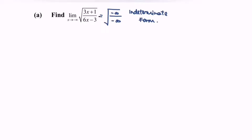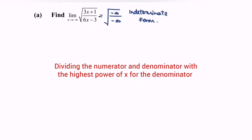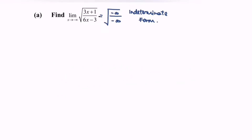The strategy to solve this kind of situation is to divide the numerator and the denominator by the highest power of x in the denominator. In this case, the power of the denominator is x, so we need to factor out x.